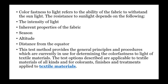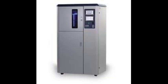The resistance to sunlight depends on the following: 1. The intensity of light, 2. Inherent properties of the fabric, 3. Season, 4. Altitude, 5. Distance from the equator. This test method provides the general principles and procedures currently in use for determining the color fastness to light of textile materials. The test options described are applicable to textile materials of all kinds and for color prints, finishes, and treatments applied to textile materials.